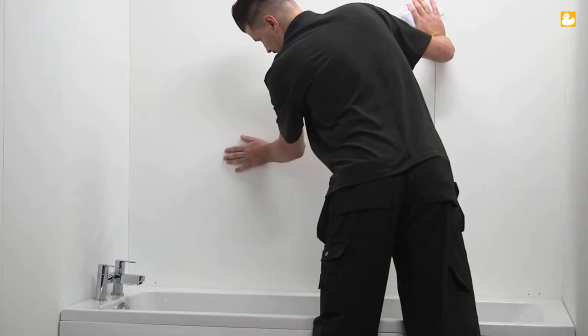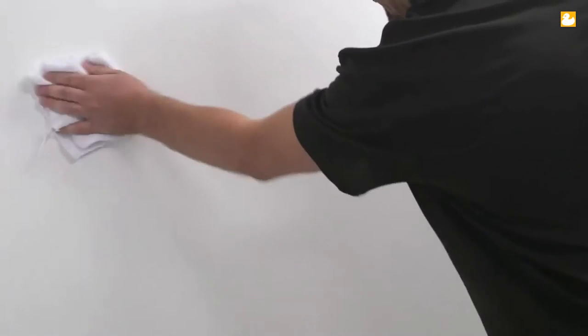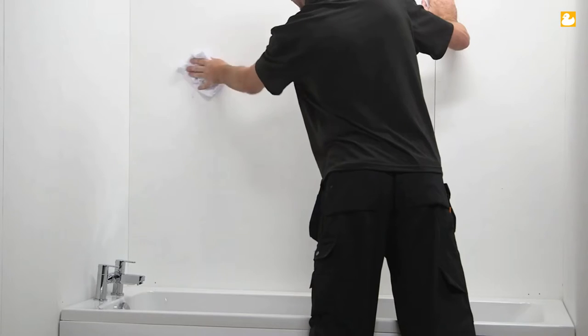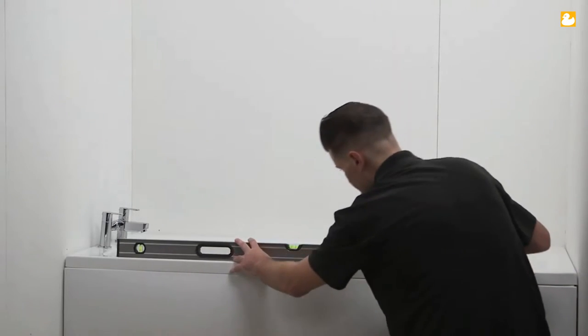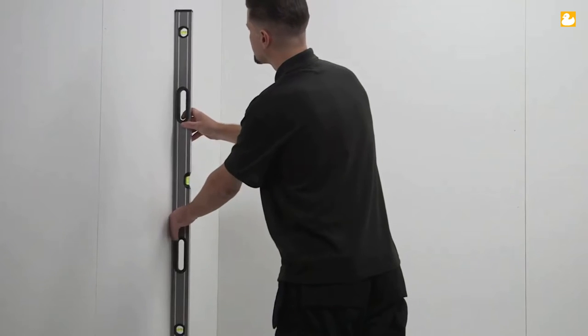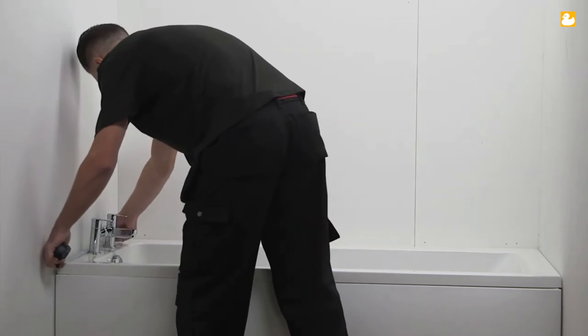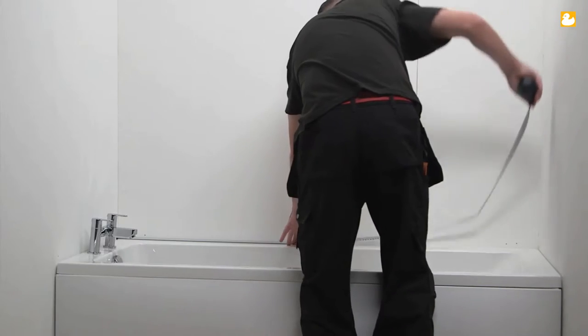First up, make sure your walls are flat, and if fixing to tiles, ensure the walls are sound, plumb and degreased. Next, check the levels on your bath and walls. Then measure the width and length of the bath for our shore seal strips.